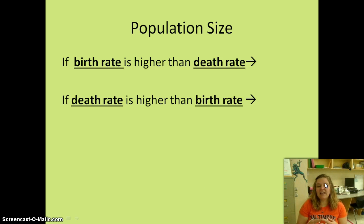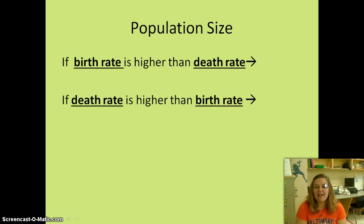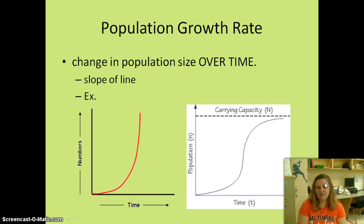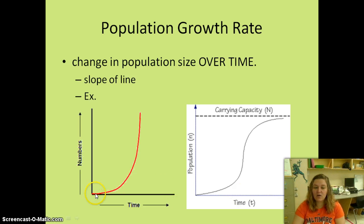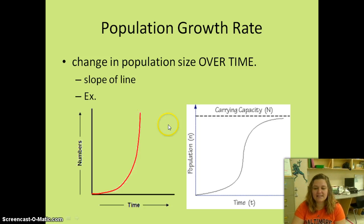If the birth rate is higher than the death rate, the population size will go up. If the death rate is higher than the birth rate, the population size will go down. Whenever we talk about the population growth rate, we're talking about the change in population size over time, and it's going to be a sloped line. Here we see the population going up very fast — this is what the human population looks like right now. Here we see a population that goes up for a while and then starts to level off, and we call this carrying capacity.